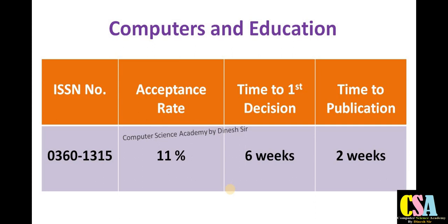The next category is Computers and Education, specifically dedicated to education researchers and computer field researchers. Research falling under social science and also computer science and engineering can explore this journal. This is a rapid publication journal — total time required is eight weeks — so your manuscript will get published in this Scopus and SCI index journal. The acceptance ratio is 11 percent.